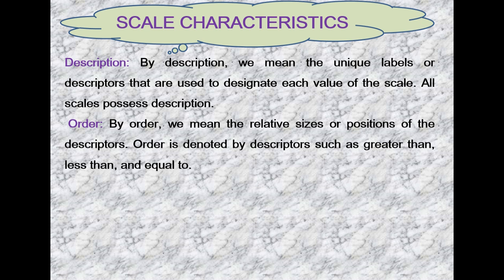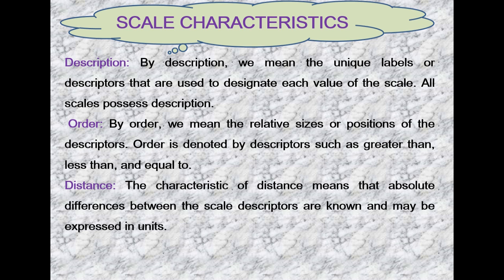The second characteristic is Order. By order, we mean the relative sizes or positions of the descriptors. Order is denoted by descriptors such as greater than, less than, and equal to. The third characteristic is Distance. The characteristic of distance means that absolute differences between the scale descriptors are known and may be expressed in units.